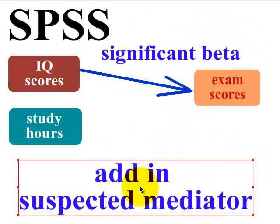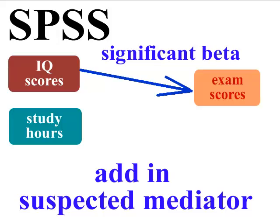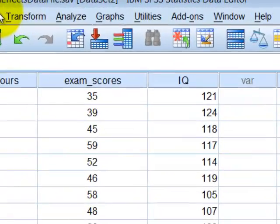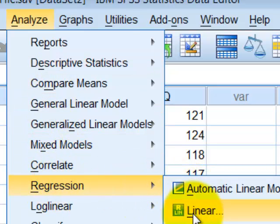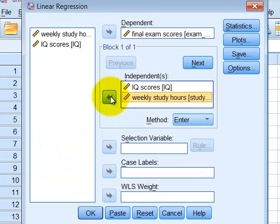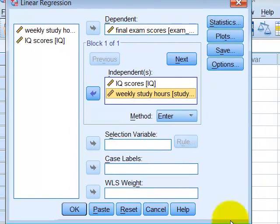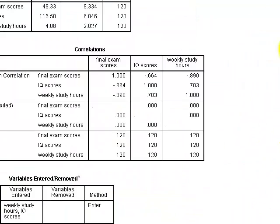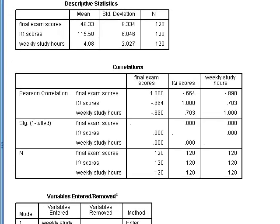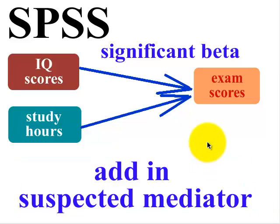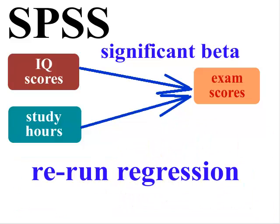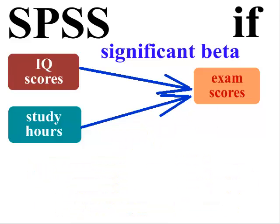Now we're going to add in the second predictor to see if it's a mediator or not. Let's go back to SPSS and rerun the analysis — Regression, Linear. We're going to add in the weekly study hours and click OK. So we've added in the suspected mediator and reran the regression with both predictors now.